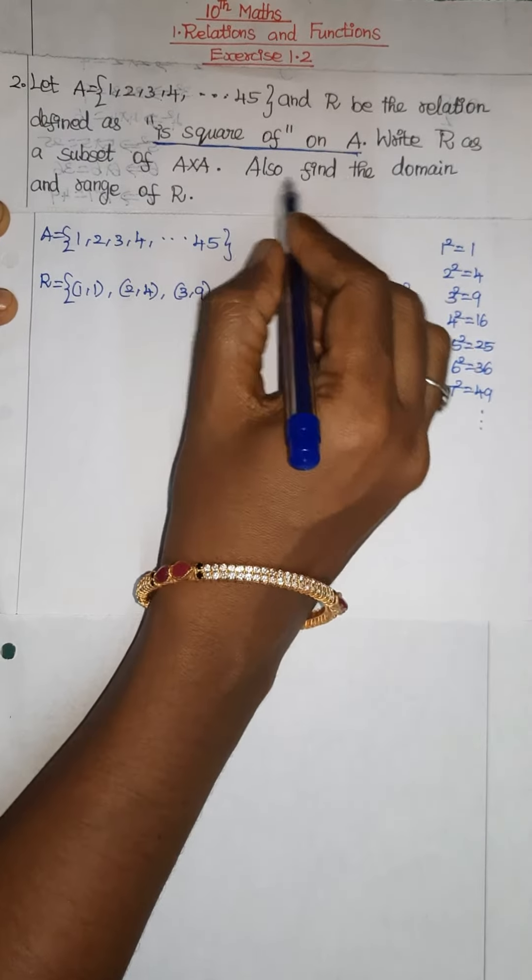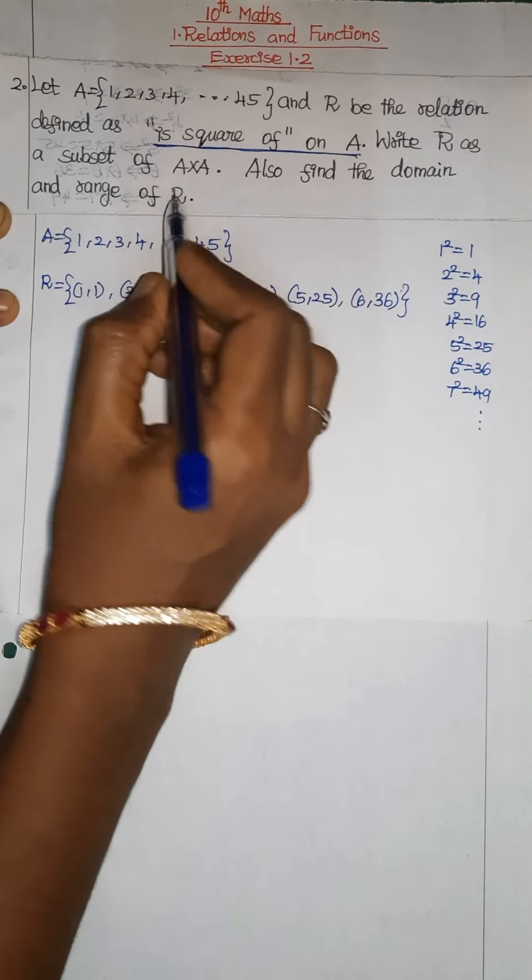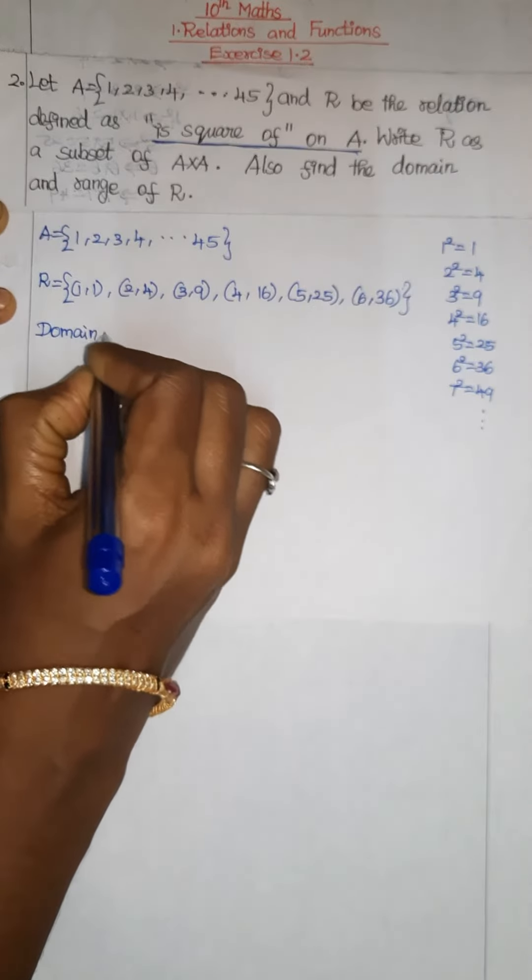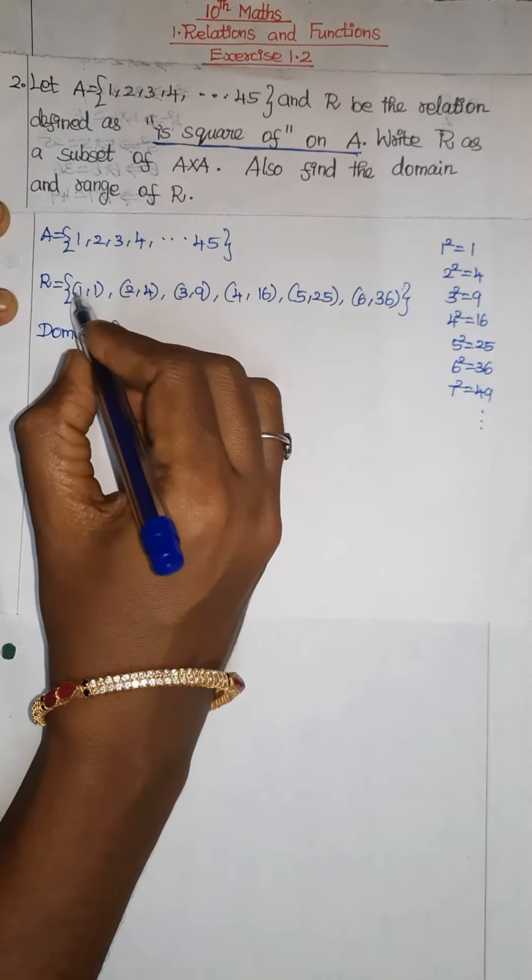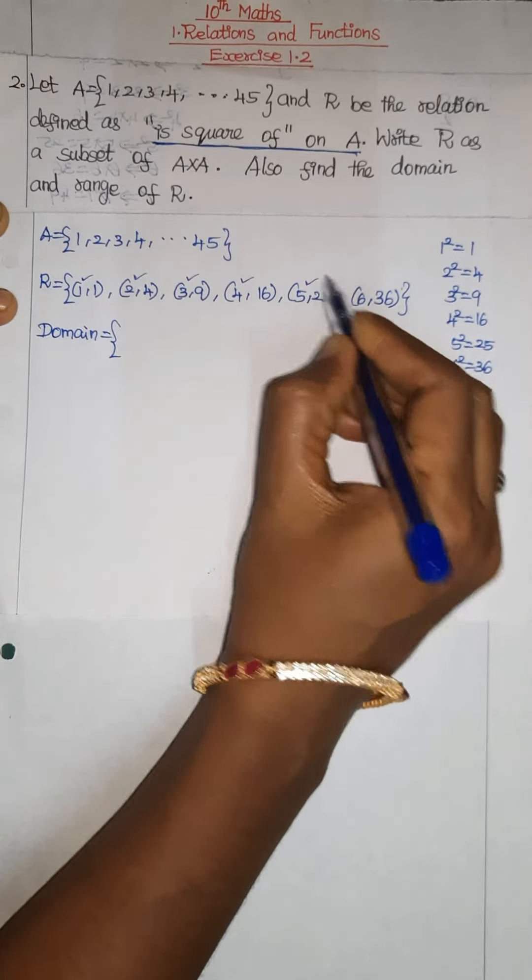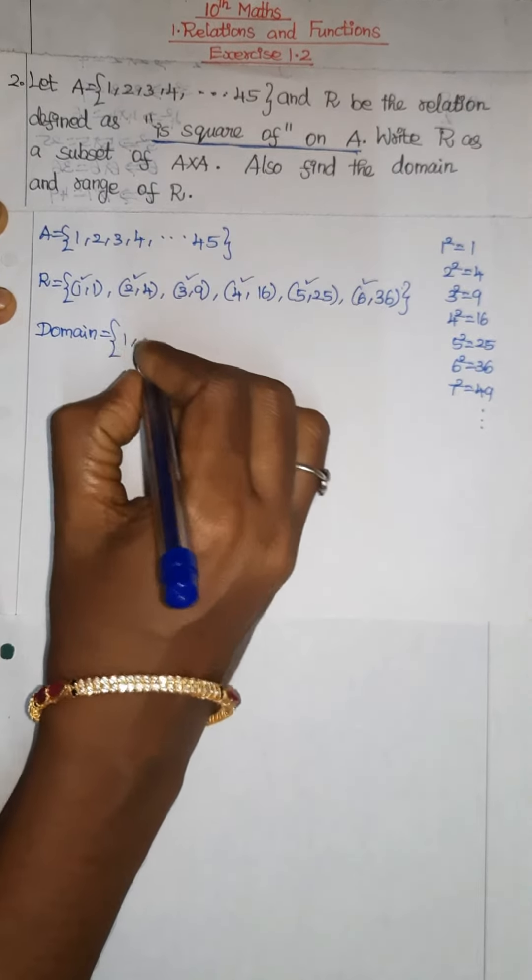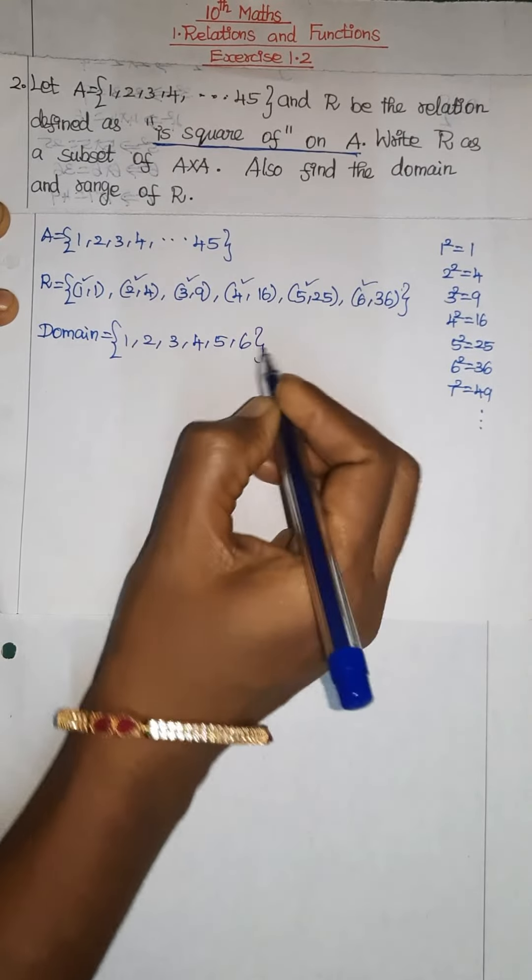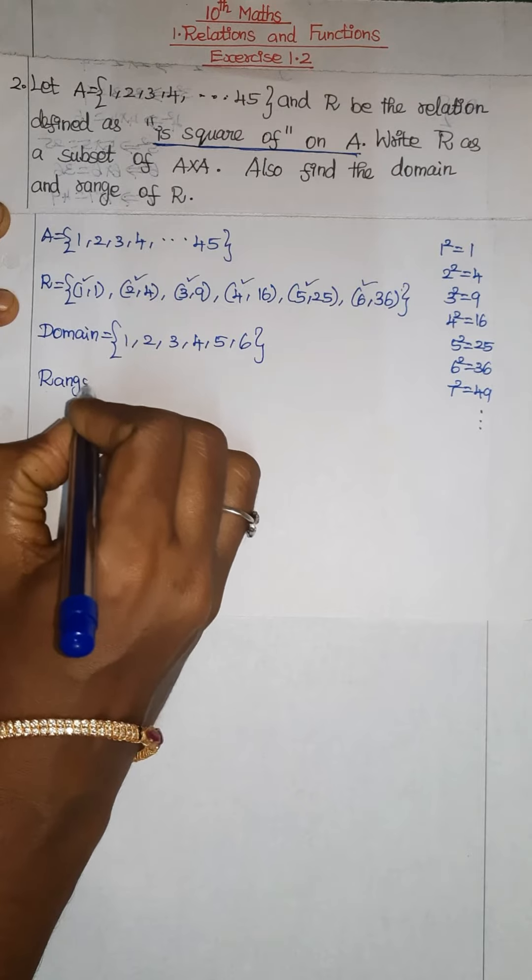Also find the domain and range of R. Domain means set of first elements: 1, 2, 3, 4, 5, 6. Then range means set of second elements.